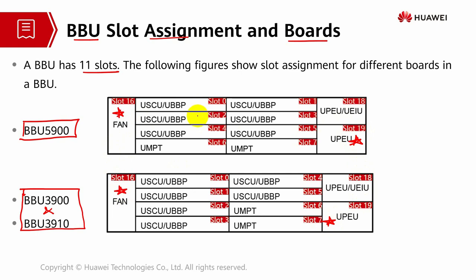For BBU 5900 series, on the left-hand side we have slots 0, 2, 4, and 6 — using even numbers. Comparing this with the 3900 series on the left-hand side, we start with 0, 1, 2, and 3, following the sequence. On the right-hand side, the 5900 series starts with odd numbers: 1, 3, 5, and 7. For the 3900 series, the right-hand side follows the sequence 4, 5, 6, and 7. That is the difference in terms of numbering.